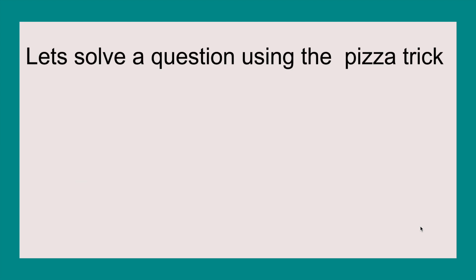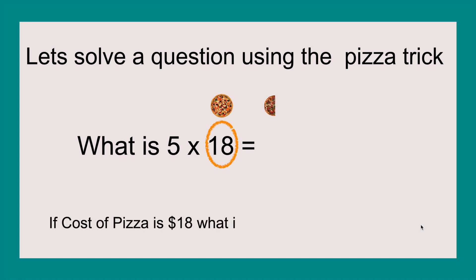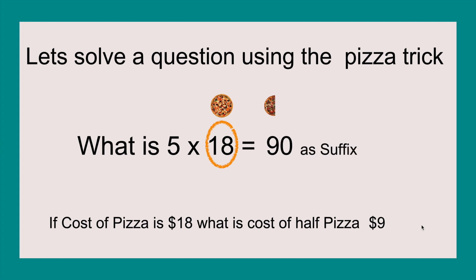Let's solve a question using the pizza trick. What is five times eighteen? We circle the eighteen, put the full pizza, then the half pizza. Then we write out a sentence — you can use it if you want but you don't have to: if cost of pizza is eighteen dollars, what is cost of half pizza? That means it's nine dollars. So we take the nine and put it there, which is technically eighteen divided by two, because nine plus nine equals eighteen. Then we put the zero as a suffix to the nine, giving us ninety.